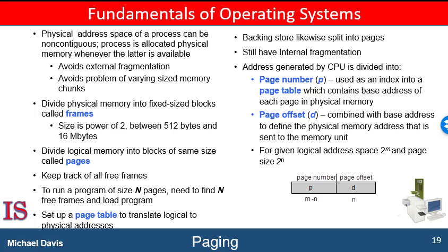If a job consists of n number of pages — let's say five pages — then it is necessary to find five empty frames anywhere in memory. Remember, a page is a logical structure and a frame is the physical memory location where that page will be stored. Remember, these frames do not have to be contiguous.